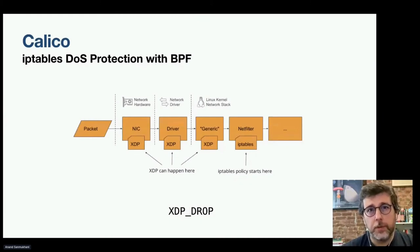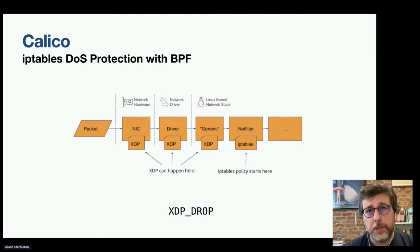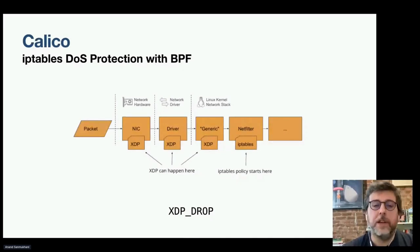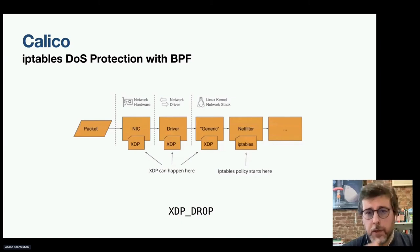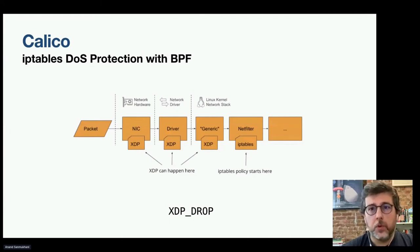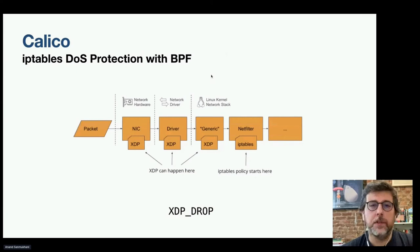The XDP program type allows you to insert BPF programs very early in the packet processing pipeline. XDP programs can be attached at a few different points, including the kernel, the network driver, and even the network interface card itself. Calico will pick the fastest available hook and set up its XDP programs there. This means you can drop connections with XDP_DROP very early on and without tracking the connection, which reduces a lot of the CPU required to deal with a flood of incoming data.